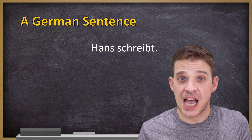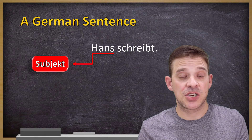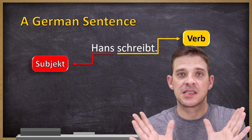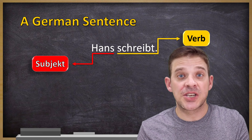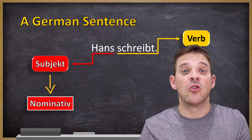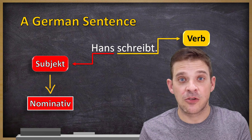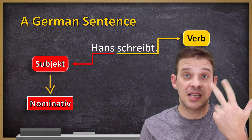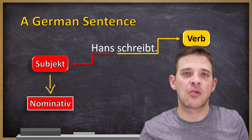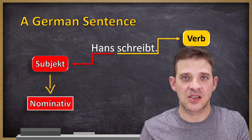Let's take a simple sentence: 'Hans schreibt' — Hans is writing. We have 'Hans' which is the subject and 'schreibt' which is the verb. This is already a complete sentence. Importantly, the subject is always nominative. Nominative is usually the first case you learn — whenever you learn a new noun like 'der Tisch,' 'die Flasche,' 'das Buch,' this is always the nominative form. Nominative is the original form of the noun, and it is always for the subject.